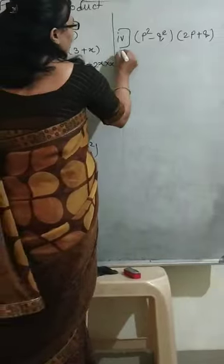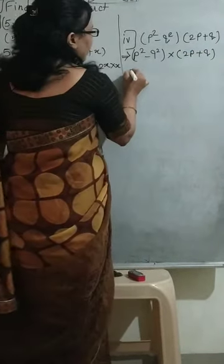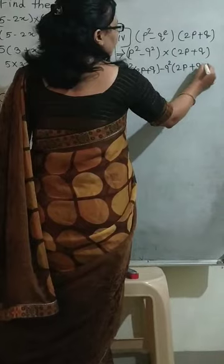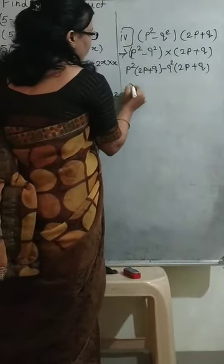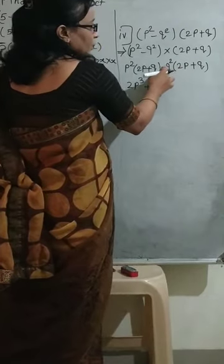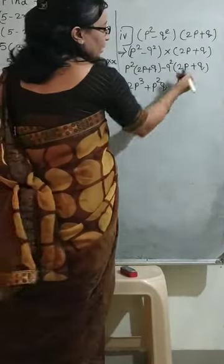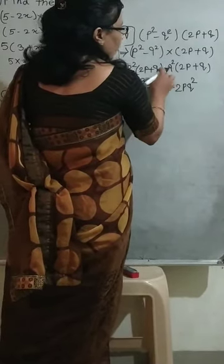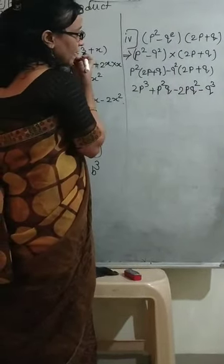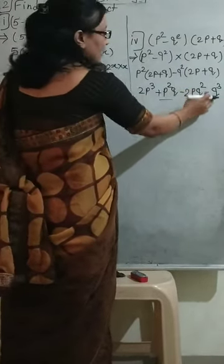Next question: (p² − q²)(2p + q). Expanding: p² into (2p + q) minus q² into (2p + q). So p² into 2p gives 2p cubed, plus p² into q gives p²q. Then minus q² into 2p gives minus 2pq², and minus plus minus, so minus q² into q gives minus q cubed. We check for like terms — there are none, since we have p³, p²q, pq², and q³ as separate terms. Therefore the answer is: (p² − q²)(2p + q) = 2p³ + p²q − 2pq² − q³.